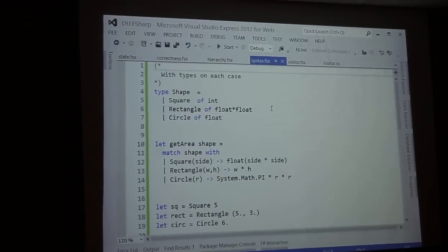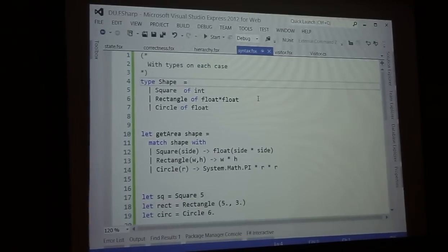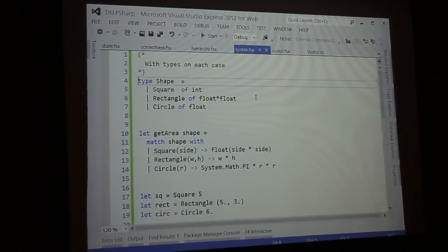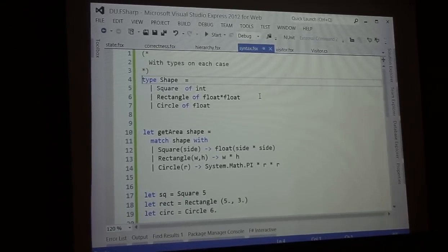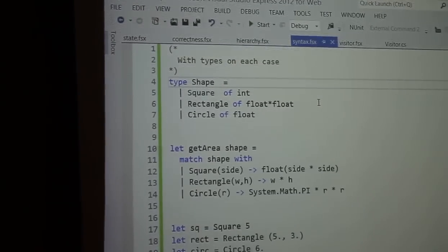All right, so here's a simple one. We got the type, the name of the discriminating union is shape, and it has three cases: there's a square case, a rectangle case, and a circle case. Now, you can create a value that's either a square, rectangle, or a circle.